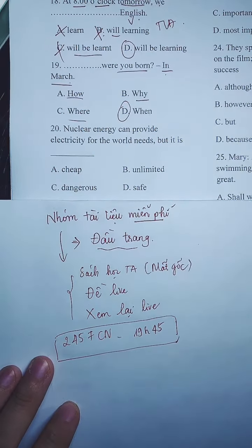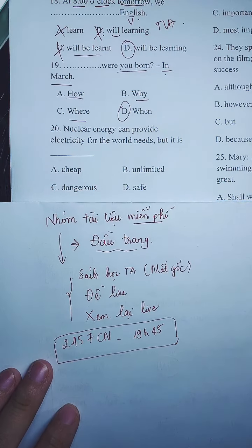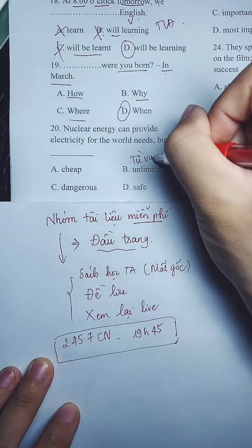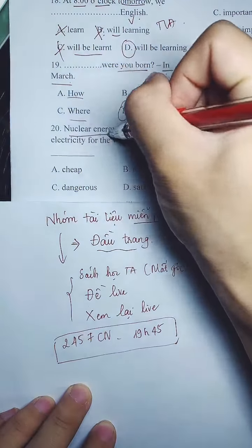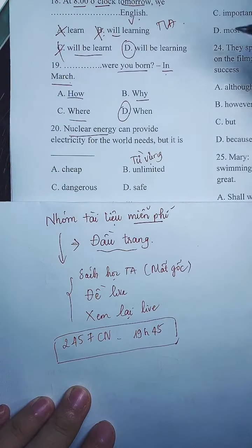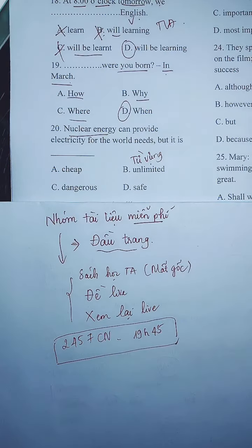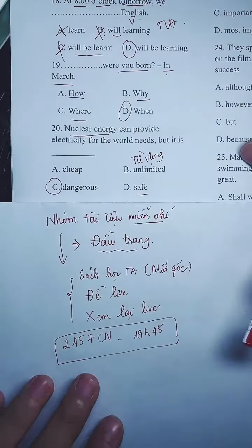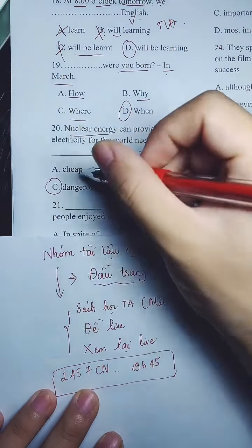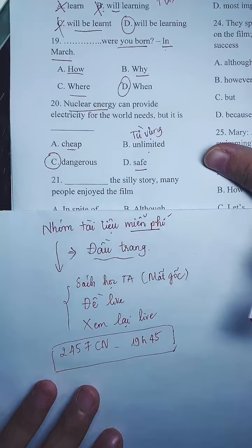Câu 20 là câu về từ vựng — yêu cầu dịch ra. 'Nuclear energy' là năng lượng hạt nhân. Có thể cung cấp điện cho nhu cầu của toàn thế giới, nhưng nó rất nguy hiểm. Từ nguy hiểm là đáp án C. Ngược lại với nguy hiểm là an toàn — đáp án D. 'Unlimited' là không giới hạn và 'cheap' là rẻ. Năng lượng hạt nhân thì nguy hiểm.